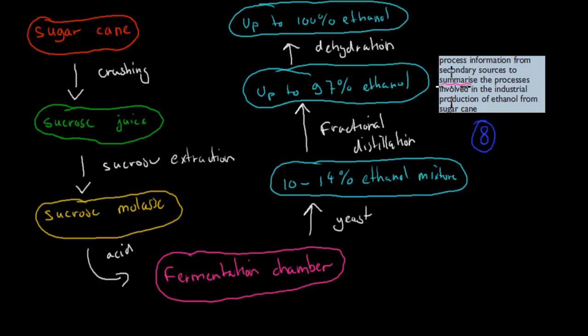Process information from secondary sources to summarize the process involved in industrial production of ethanol from sugarcane. Here we start from sugarcane, and we want to go to ethanol. First, we have to crush it to produce sucrose juice. From sucrose juice, we extract sucrose, so now it's pure sucrose, all the water is gone or most of it. From there, we have this sucrose molasse, which is like a syrup, mostly sucrose, not much water left. We add some acid to kill bacteria. Then it's put in the fermentation chamber where it stays for quite some time. Here, the yeast works on it to produce 10 to 14% ethanol mixtures. The rest of it is water. To get to up to 97% ethanol, we fractionally distillate the actual ethanol. This decreases the water content and increases the ethanol content. Then we can dehydrate that remaining water to get to up to 100% ethanol. This is how industry produces ethanol from sugarcane.